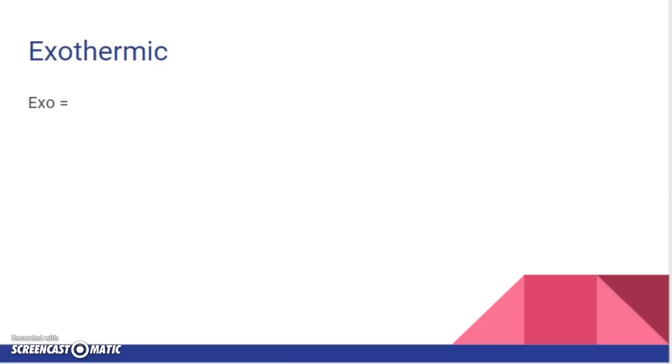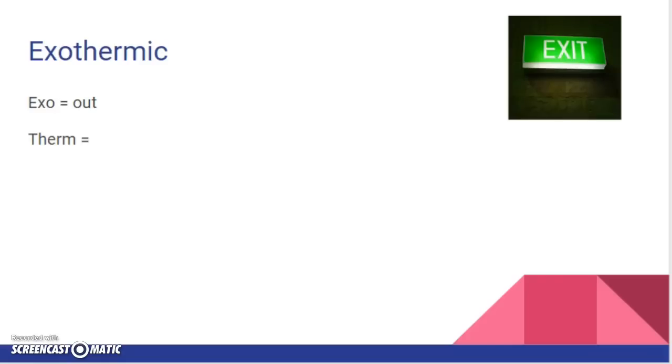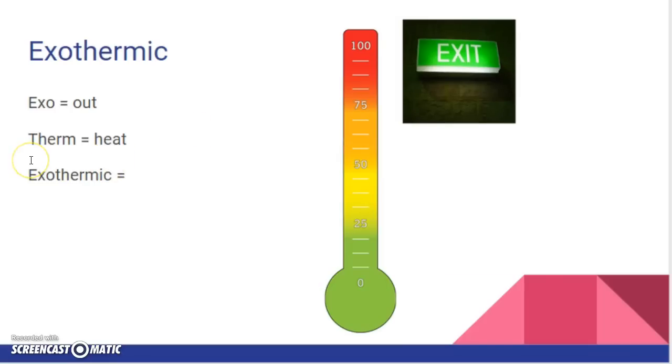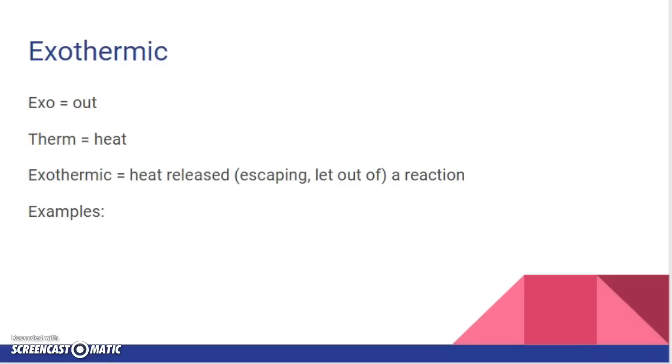One of the words that we're going to use a lot this semester is exothermic. Where have you heard the term exo before, or ex? Exit. And exit means out. What about therm? Well, you've probably heard of a thermometer, and therm means heat. So if I put that together, exo out, therm heat, exothermic means that heat is released, or escaping, or let out of a reaction.